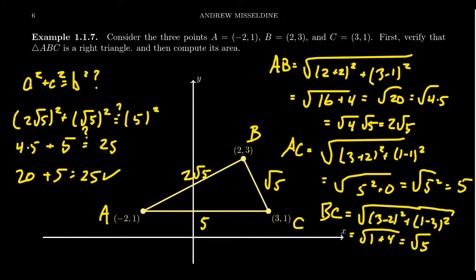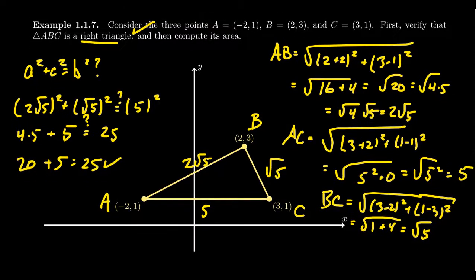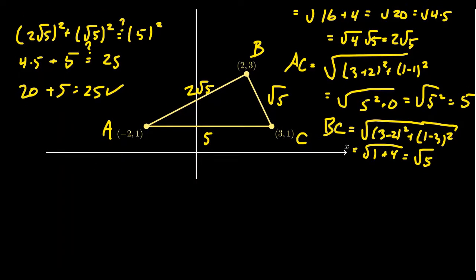And so since the three line segments do satisfy the Pythagorean equation, this is, in fact, a right triangle. So that's one way you could check to see if a triangle is right or not. Another approach you could take was to make an argument using slopes. I want to present both types of arguments here for your benefit.